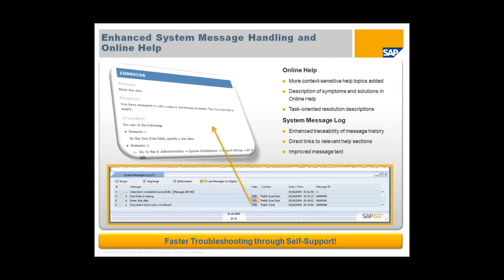Continuing with enhanced ease of use, we've also done significant work on system message handling and online help. We've given you more context-sensitive help topics, descriptions of symptoms and solutions, and task-oriented resolution descriptions. The system message log — now an integrated part of the user interface — not only helps you understand what's going on, but provides enhanced traceability of message history, direct links to relevant help sections when an issue pops up, and significantly improved message text. This really gives you the ability to troubleshoot the solution much faster through self-support.